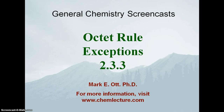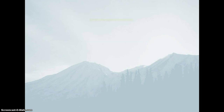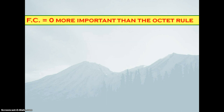Here we're going to talk about the octet rule. The octet rule is what guides us in figuring out how things usually bond when we're drawing Lewis structures. And of course, like any rule, there are lots of exceptions. We've talked about the concept of formal charge in determining which is our most stable resonance structure, and one of the things we need to keep in mind is that having a formal charge of zero is actually much more important than the octet rule.